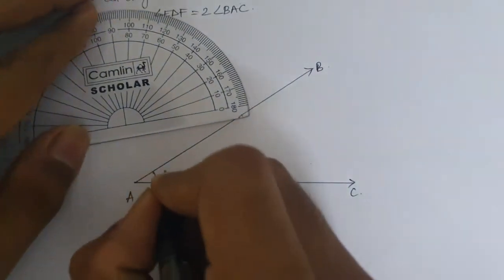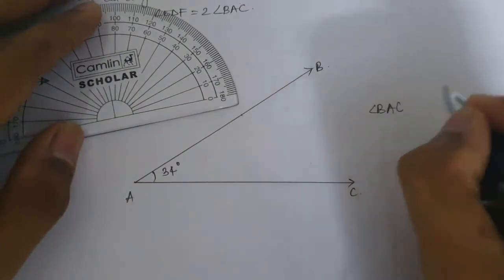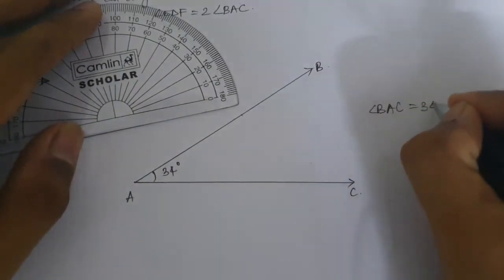So angle BAC is 34 degrees. We write here angle BAC equal to 34 degrees.